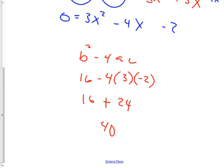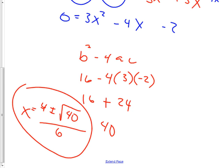So b² − 4ac = 40. Forty is kind of a nice number but it doesn't have a perfect square root. So then I can just say: I'm halfway done with the quadratic formula, may as well switch. x equals negative b — which is negative negative four, so four — plus or minus the square root of b² − 4ac, which I already computed, all over 2a, which is 2 times 3 = 6. And there we go.